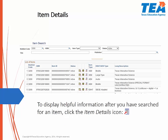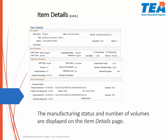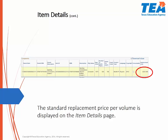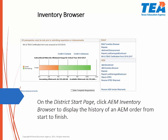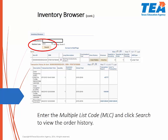I normally search by MLC. To display helpful information after you have searched for an item, click the Item Details icon. The Manufacturing Status and Number of Volumes are displayed on the Item Details page. For instance, this is a Grade 3 spelling book that has been Brailled; it is complete with 54 volumes. This page will also display the standard replacement price per volume. For example, Volume 1 of the Braille 3rd Grade Spelling Book has a replacement cost of $321. The Inventory Browser is also a good resource to use. This page displays the history of an AEM order from start to finish. On the District Start page, click AEM Inventory Browser, enter the Multi-List Code (MLC), and click Search to view the order history.